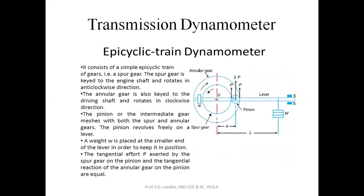The last is the epicyclic train dynamometer, which basically consists of a simple epicyclic train. The engine shaft is connected to a spur gear system, and this spur gear is attached to an annular gear system. The annular gear is an internal gear which is run through a pinion — the intermediate gear that meshes with both the internal gear and the spur gear. Through a lever, a weight is attached so that torque can be applied on the system. A counterbalance weight is attached to keep the arm in a neutral position when no load is acting.